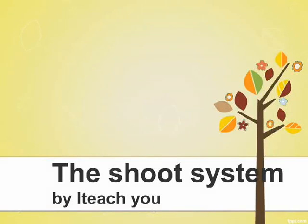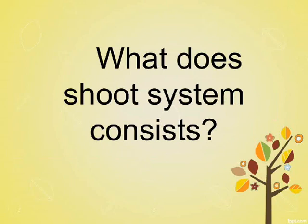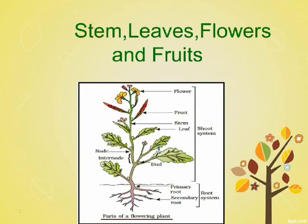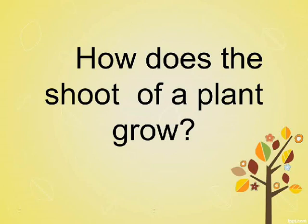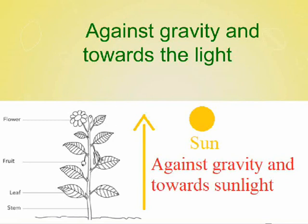The shoot system consists of stem, leaves, flowers, and fruits. How does the shoot of a plant grow? Against gravity and towards the light.